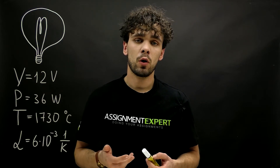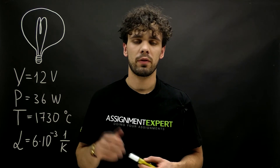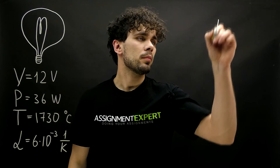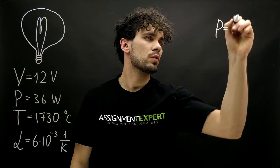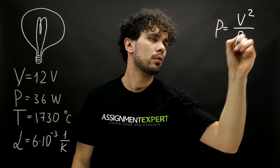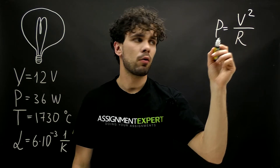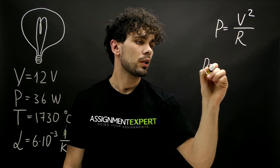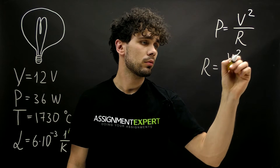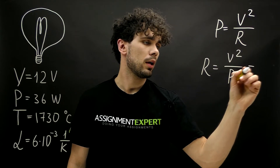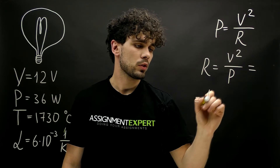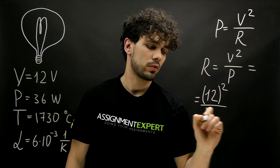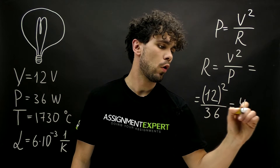First of all, we need to find the resistance at the operating temperature of the lamp. For that, we need to use the definition of electrical power: P equals V squared over R, where P is the power, V is the voltage, and R is the resistance. From here we get R equals V squared over P, and this gives us 12 squared over 36, which equals 4 Ohm.